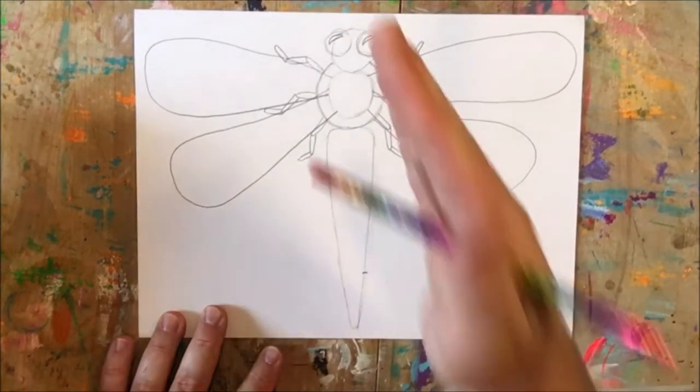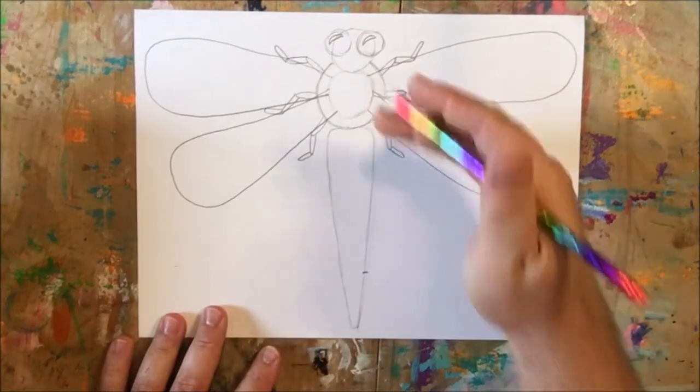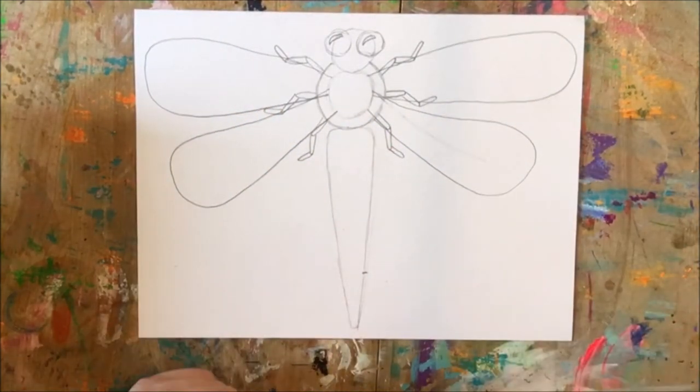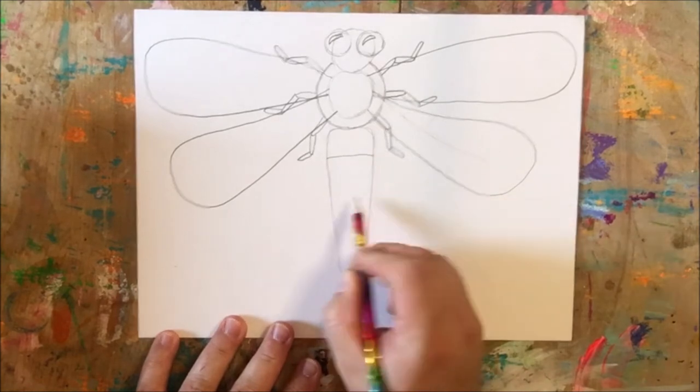Now we have our head, our eyes, our thorax, our abdomen, six legs, four wings. And I'm going to come back to the thorax here just to add some visual interest. I'm going to add some stripes in the thorax.